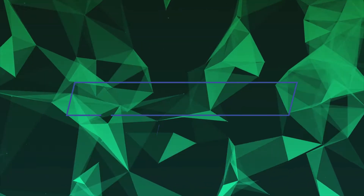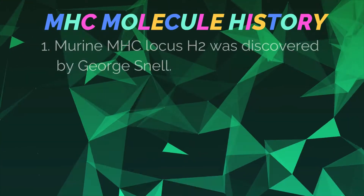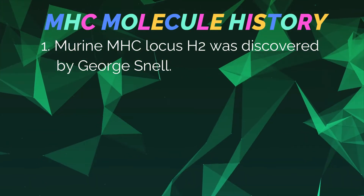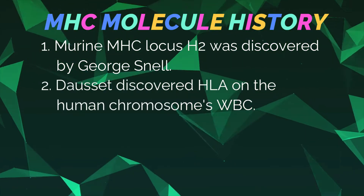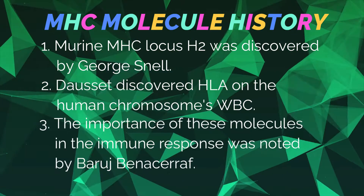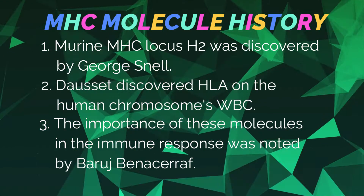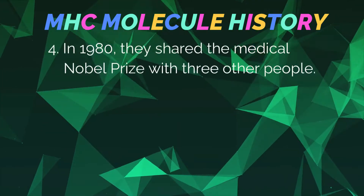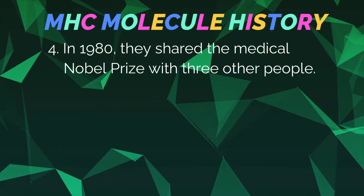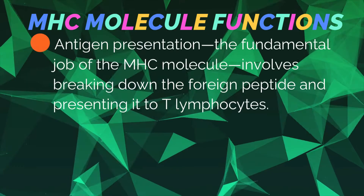MHC molecule history: Number one, murine MHC locus H2 was discovered by George Snell. Number two, Dawson discovered HLA on human chromosome white blood cells. Number three, the importance of these molecules in the immune response was noted by Beveridge, Benacerraf, and others. Number four, in the 1980s they shared the Medical Nobel Prize with three other people.